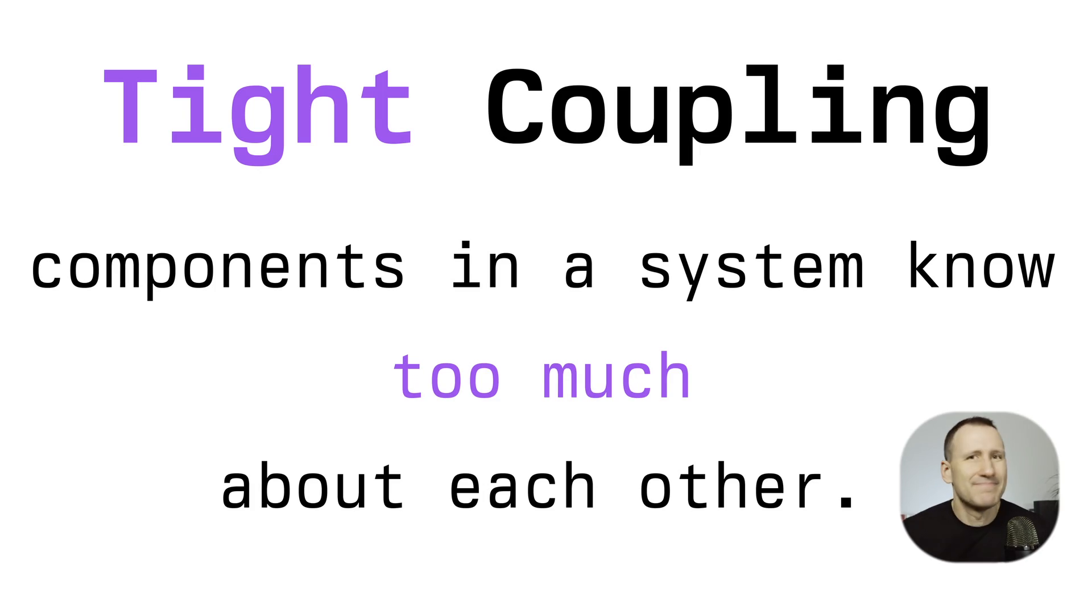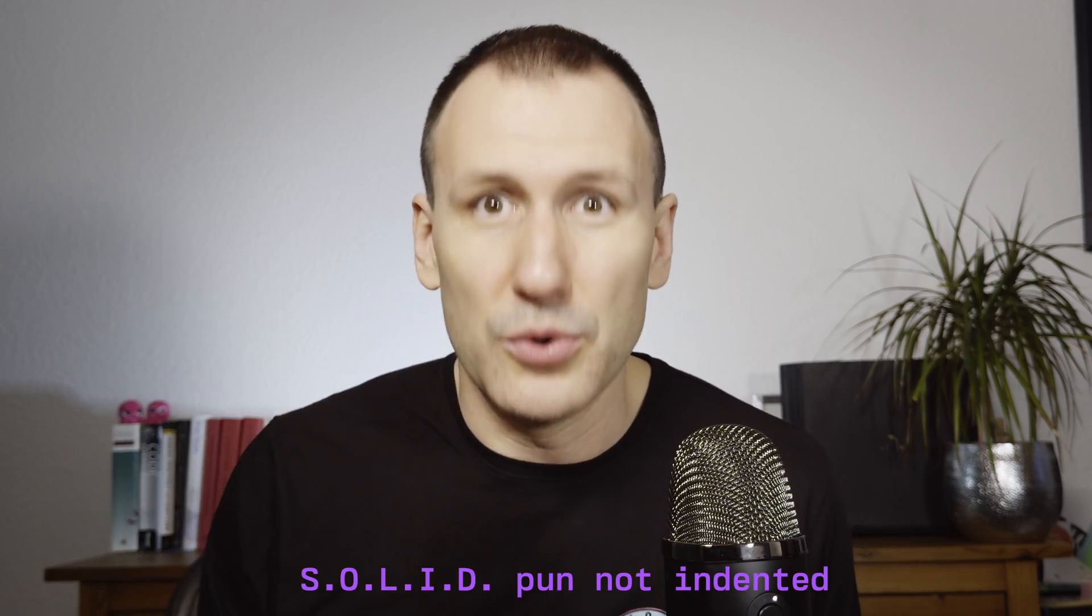At the danger of oversimplifying things, a tightly coupled system is a system where objects know too much about each other and rely on too many properties and implementation details of others while doing their own thing. So how much is too much? It depends. Unfortunately, once you leave software engineering 101, there are very few fast and hard answers. There are just north stars and southern crosses that will point you in a general direction, but that will not give you solid rules to follow.